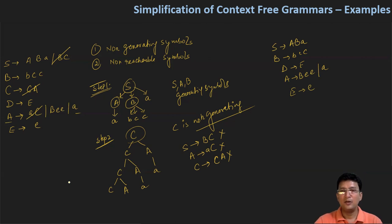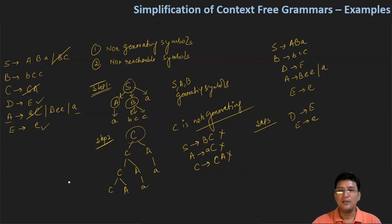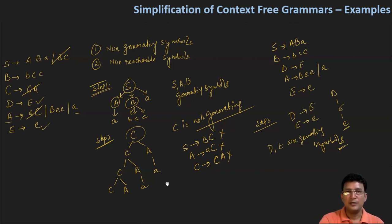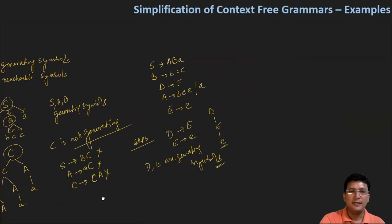Ab hum baat karte hain D aur E non-terminal symbols ki — isko step 3 mein karlete hain. D se hum E laate hain aur aapko pata hai ki E se hum e la sakte hain. To chunki D se hum E laare hain aur E se e laare hain, agar hum iska expansion kare ki D se E and then E se e, to iska matlab hai ki D se bhi terminal symbol e pe pahunch rahe hain aur E se bhi terminal symbol e pe pahunch rahe hain. Iska matlab kiya hai ki D aur E bhi generating symbols hain.